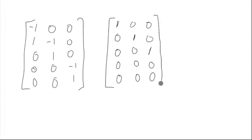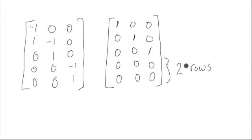Notice how many rows of zeros you have — you have two. Those rows of zeros actually correspond to the number of connected components. Another way of thinking about it is it's the dimension of V being a vector — you could think of it as a vector space or Z-module, depending on your point of view.